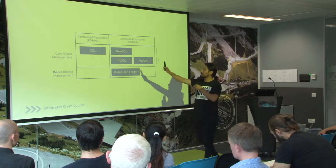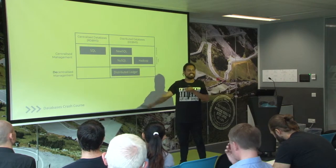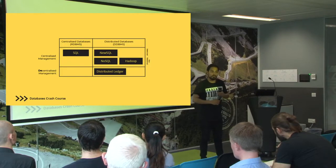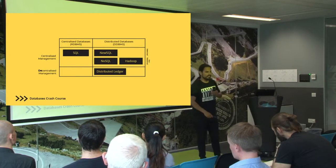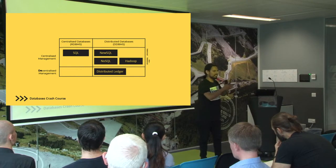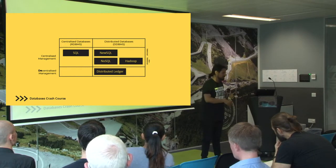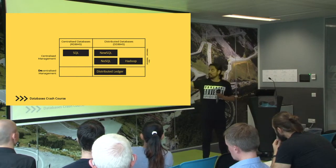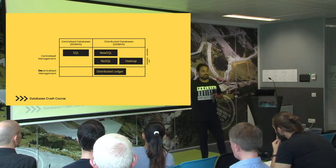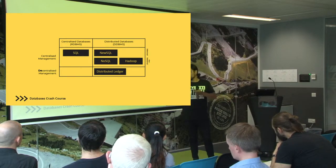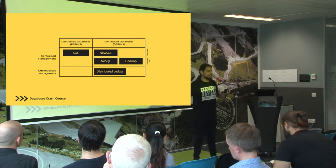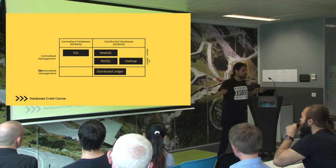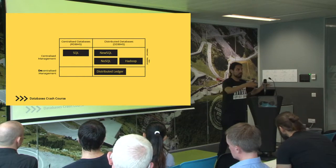Even distributed databases still have centralized versus decentralized management. Centralized management means Google uses distributed data systems, but does that mean their data is publicly available or someone else can control it? No — that's why they're called centralized management systems. But where distributed ledger technology comes in is as a decentralized management system, where everyone is an equal owner in the consortium of nodes.